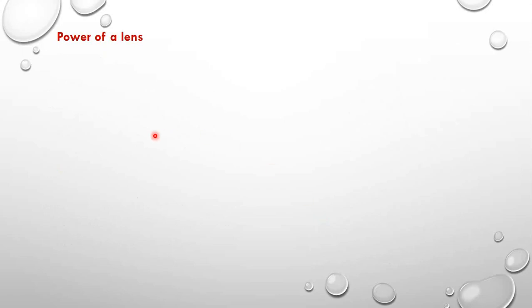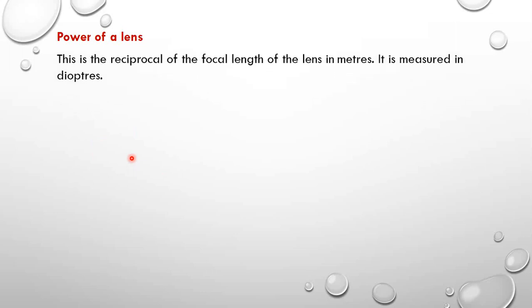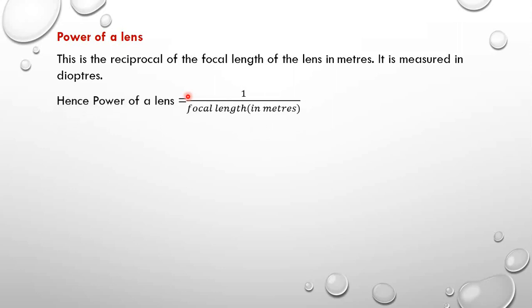Let us look at the power of a lens. The power of a lens is the reciprocal of the focal length in meters. It is measured in a unit called diopters. A diopter is the power of a lens of focal length 1 meter, and it is the SI unit for the power of a lens. The formula is: power equals 1 over F, where F must be in meters.